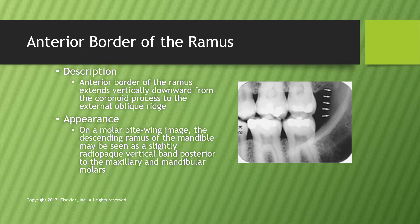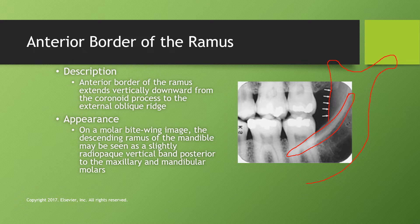The anterior border of the ramus extends vertically downward from the coronoid process. The external oblique ridge is separate from the anterior border of the ramus — the anterior border continues upward to the coronoid process, then the sigmoid notch, then the condyle. On a molar bitewing image, the descending ramus of the mandible may be seen as a slightly radiopaque vertical band posterior to the maxillary and mandibular molars.